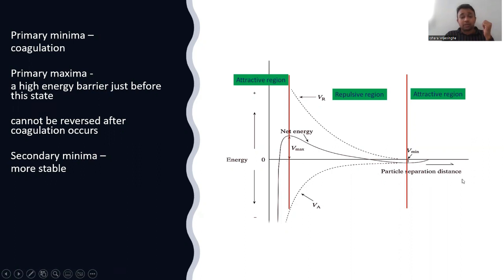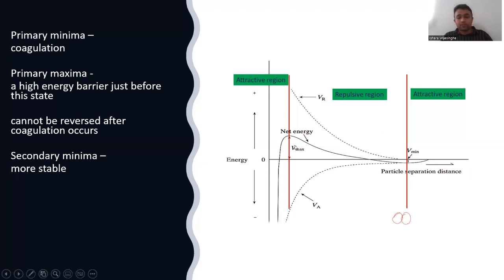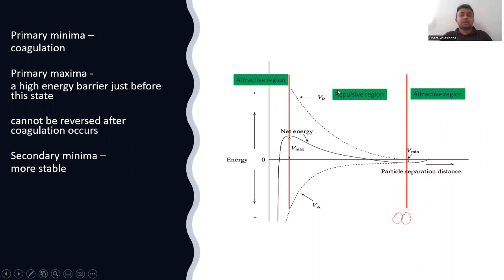The x-axis of this graph shows the particle separation distance between two particles. This graph has three distinct phases or regions: one is the attractive region where coagulation actually takes place — the coagulated state.